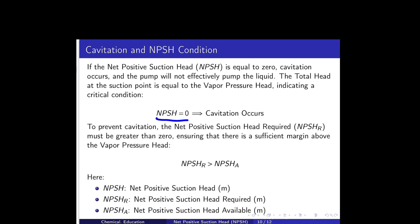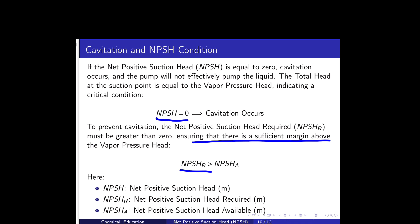To prevent cavitation, the net positive suction head must be greater than zero, ensuring a sufficient margin above the vapor pressure head. Specifically, NPSHr (net positive suction head required) must be greater than NPSHa (net positive suction head available). Only when that condition is satisfied will the pump effectively pump the liquid.